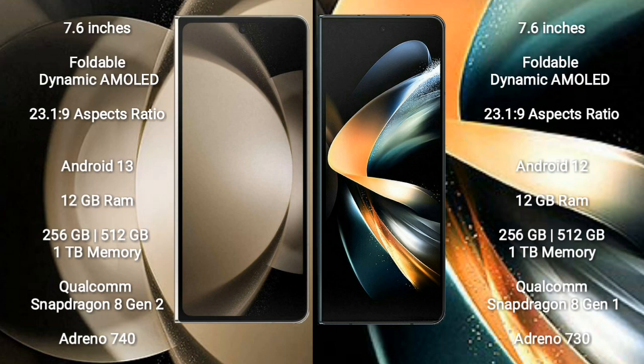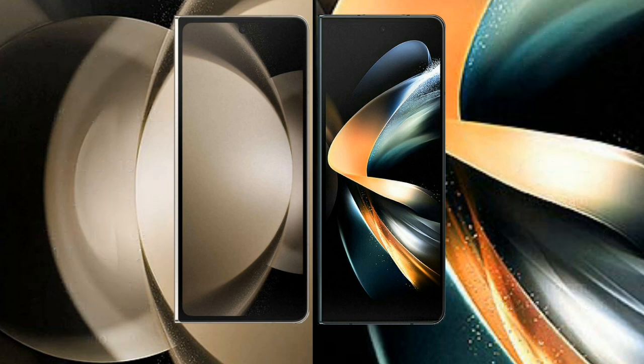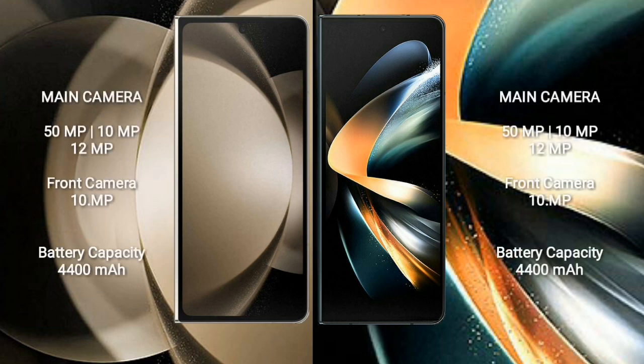Samsung Galaxy Z Fold 4 comes with 12GB RAM and 256GB, 512GB, or 1TB internal storage, Qualcomm Snapdragon 8 Gen 1 processor and GPU Adreno 730. Samsung Galaxy Z Fold 5 features a triple camera setup: 50MP plus 10MP plus 12MP and front camera 10MP.